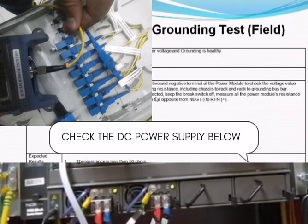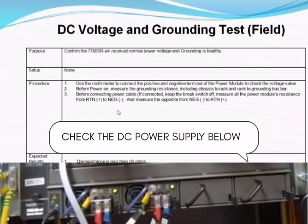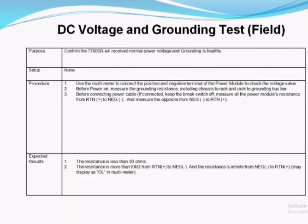The next one is the DC voltage and grounding test, which is used to check the DC voltage. Its value is between minus 40 volts to minus 70 volts. If the value is below the threshold and we are getting low voltage, it means there is something wrong in the DC voltage power supply. For the resistance, we check it through the ohm meter — if the resistance is less than 50 ohms, it means our resistance test is in fail mode.